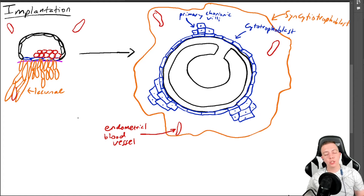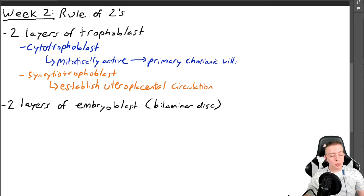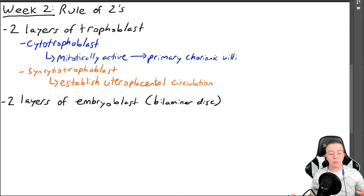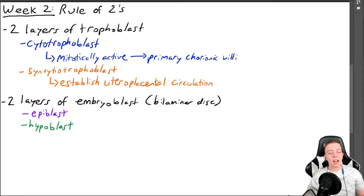There are other structures helpful to know because we'll move into them in future videos, and they also fit with the rule of twos and develop in this same timeframe. The two layers next are the embryoblast, which becomes the embryo — it becomes a bilaminar disc. Two layers, bilaminar. Between days eight and nine we start seeing the embryoblast forming, and you get two layers: the epiblast and the hypoblast.